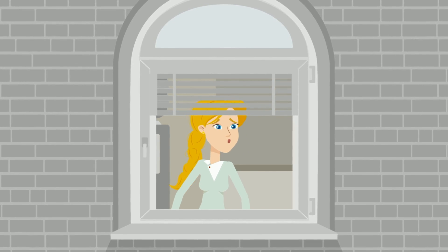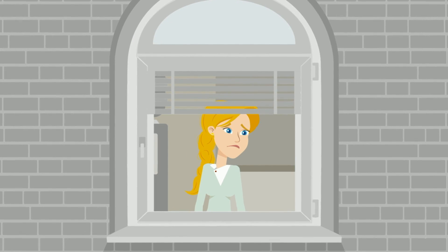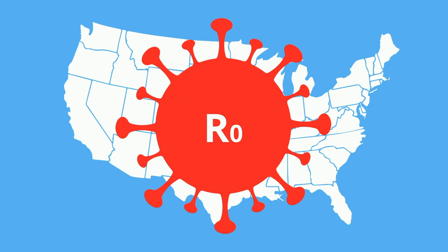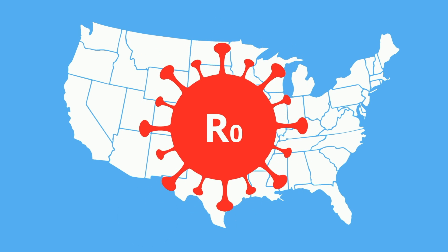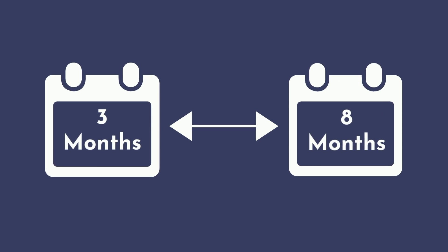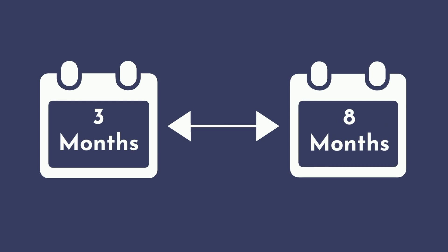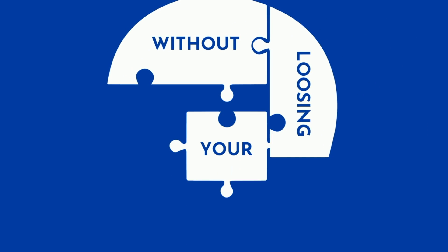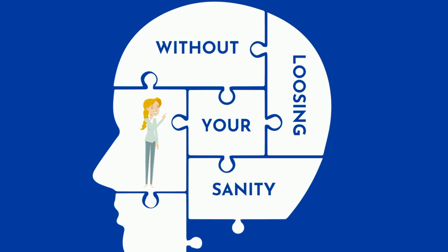Shelter in place has become our new reality, and it doesn't look like that's changing anytime soon. Depending on how far we can suppress our not, estimates from various institutions and governments place us between 3 and 8 months before things return to a semblance of normal. This is going to be a rough ride for us all. Here's how to get through it without losing your sanity.